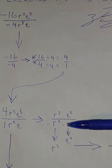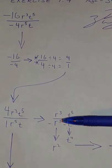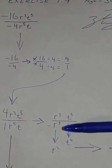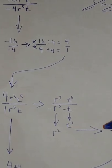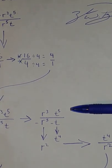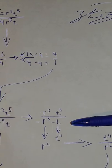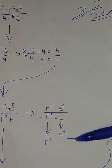In this, you have r3 minus r5, which gives you r2. And then the next one, t to the power of 5 minus t, gives you t4.